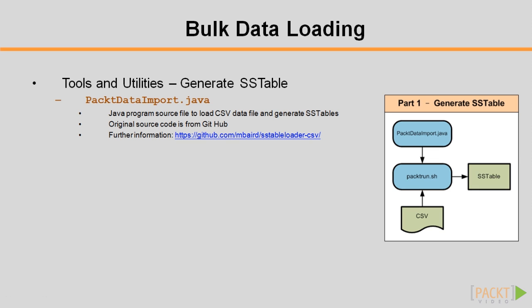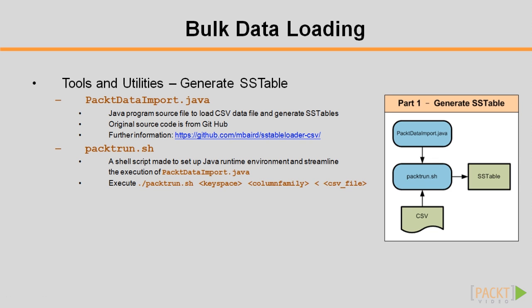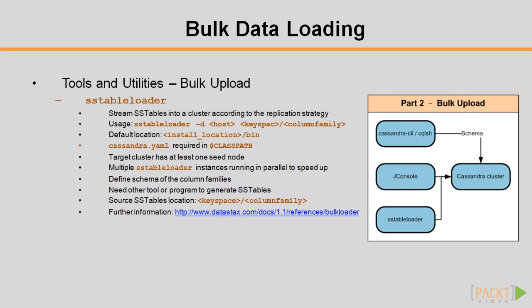Partitioner will be introduced later in the Primary Indexes video. In packedRun.sh, I properly set CassandraHome and CassandraConfig variables and include the Cassandra JAR libraries in the classpath to run packedDataImport.java. SSTableLoader streams SSTable into a cluster according to the replication strategy. It uses gossip protocol and therefore requires the Cassandra.yaml configuration file in the Java classpath to locate the seed node. It can be run in parallel to speed up the upload. The location of SSTable must follow the format as shown on the screen.